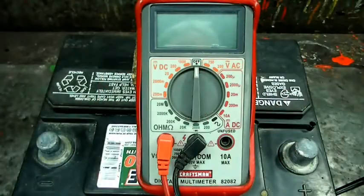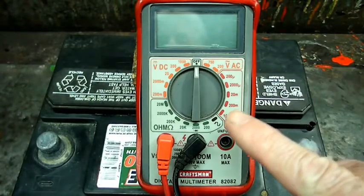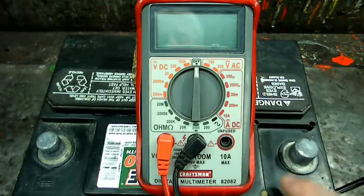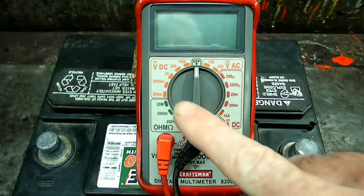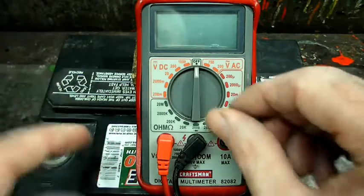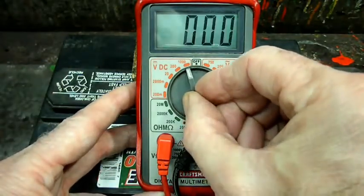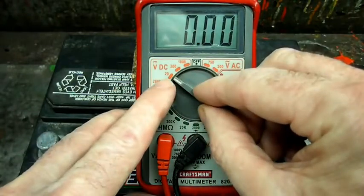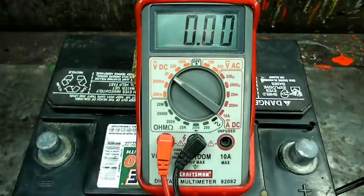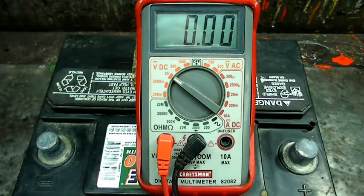Now the first test we're going to do is check this automobile 12 volt battery right here. So that is voltage DC right there. We want to move our lever to DC voltage, and on this one we're going to go to the 20 scale, because this being a 12 volt battery won't go much beyond say 14 volts.